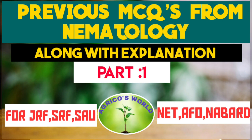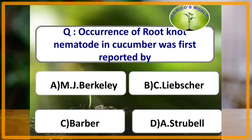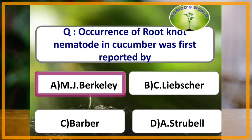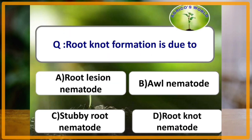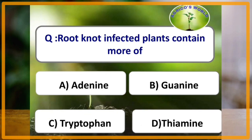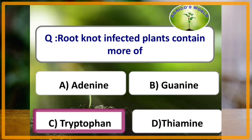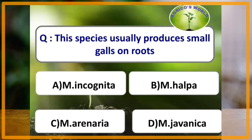Our first question: occurrence of root knot nematode in cucumber was first reported by the scientist M.J. Barkelly. Root knot formation is due to root knot nematode. Root knot infected plants contain more tryptophan. Meloidogyne halpa is the species which usually produces small galls on roots.